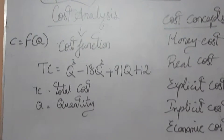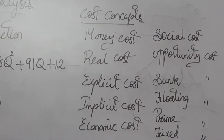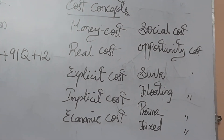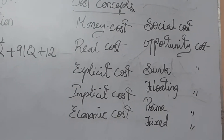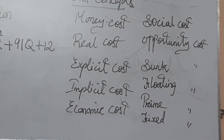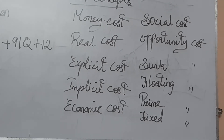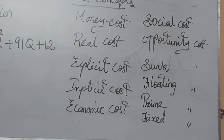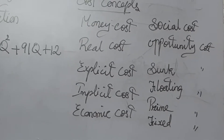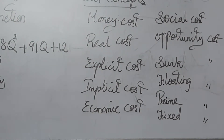Now we will move on to the cost concepts. The cost concepts include: money cost, real cost, explicit cost, implicit cost, economic cost, social cost, opportunity cost, sunk cost, floating cost, prime cost, fixed cost, and variable cost.